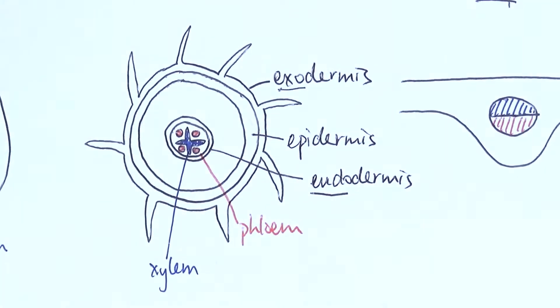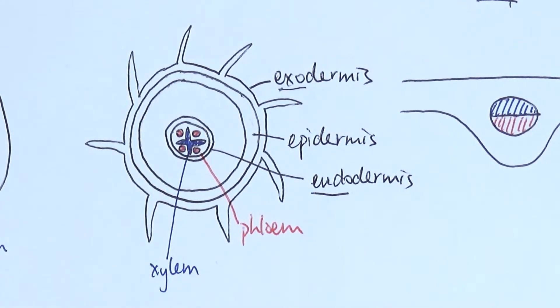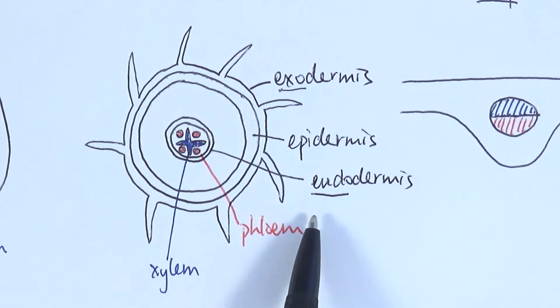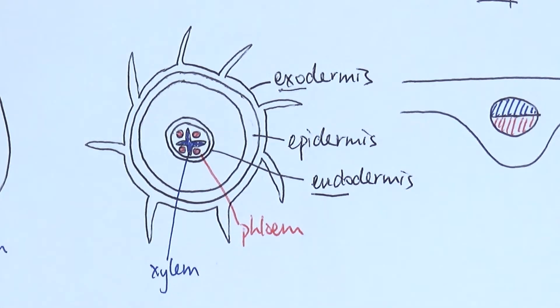It's really important to know the difference between these three things. Specifically we'll talk a little bit more about the endodermis later in another video when we talk about water transport in the roots. And that is the cross-section of the roots.